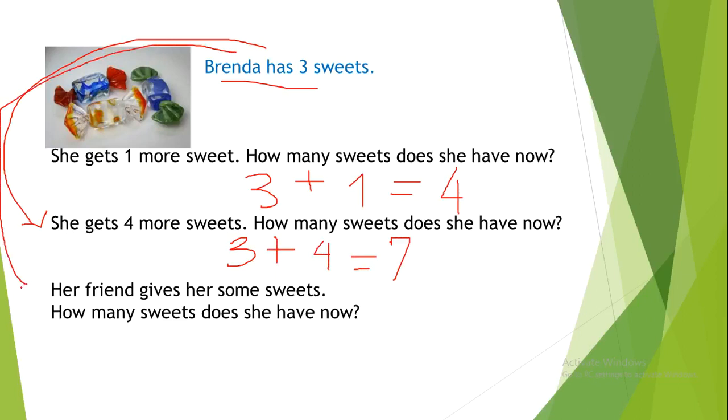Brenda has 3 sweets. Her friend gives her some sweets. How many sweets does she have now? As you may see here, her friend gives her some sweets. Her friend gave her an unknown number of sweets. We can use any letters to represent the unknown number. Let's say we use letter A: A sweets. Don't forget, when you write letter A, you must write it using a lowercase letter.